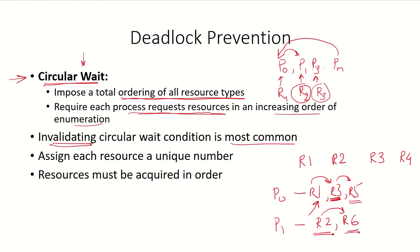Each resource is assigned a unique number and resources are acquired in order. Invalidating any one of the four necessary conditions will lead to prevention of deadlock. In the next video we will see how deadlock avoidance algorithms work.